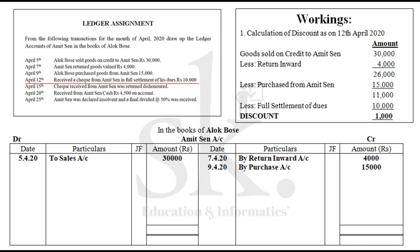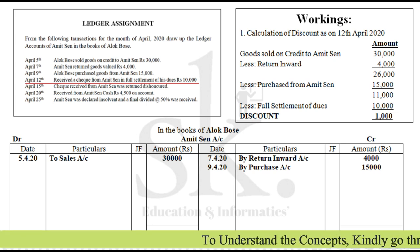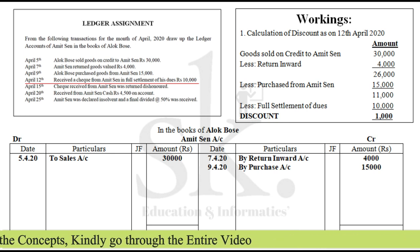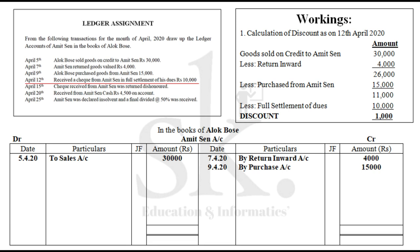Working 1: Calculation of discount as on 12th April. On 5th April, goods sold on credit to Amit Sen — Rs 30,000. Amit Sen returned goods Rs 4,000, leaving a balance of Rs 26,000. On 9th April, Alok Bose purchased goods from Amit Sen Rs 15,000, so we deduct 15,000 from 26,000, giving a current amount due of Rs 11,000. Amit Sen settled by paying Rs 10,000, which means Alok Bose allowed a discount of Rs 1,000.